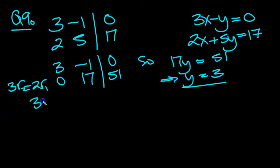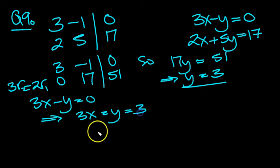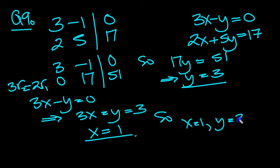And we also know that 3x minus y equals 0, so that tells us that 3x equals y. y is equal to 3, so x will clearly equal 1. So let's summarize, x equals 1, y equals 3 is our solution.